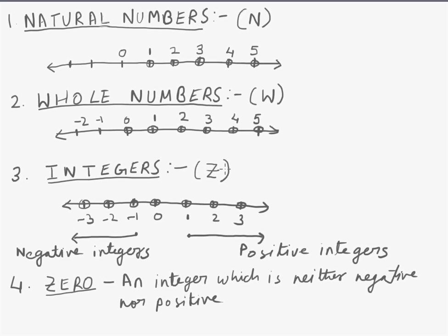Moving further, integers are denoted by Z. So integers on a number line represent the points which are 1, 2, 3 on the positive side and minus 1, 2, 3 on the negative side. So all the sets of numbers specifying 1, 2, 3, minus 1, 2, 3, including 0, are the integers.